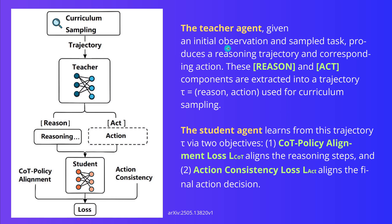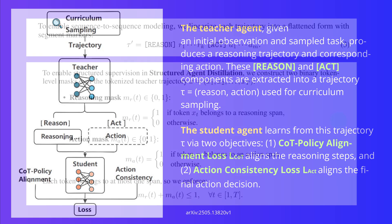The teacher agent, given an initial observation and a sample task, produces the reasoning trajectory and the corresponding action trajectory. The reason and action components are extracted into a trajectory for curriculum sampling. The student agent, since we have imitation learning, learns two objectives: the chain-of-thought policy alignment loss and the action consistency loss.